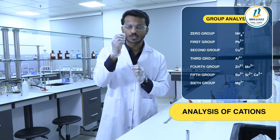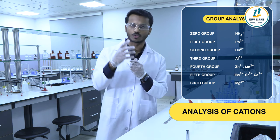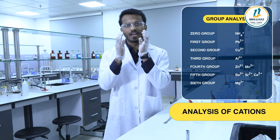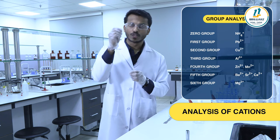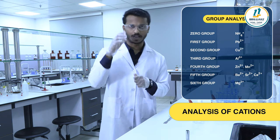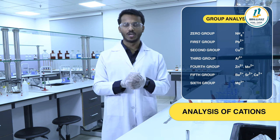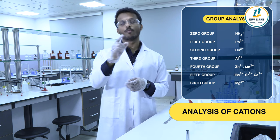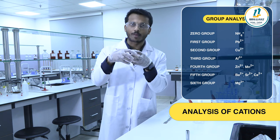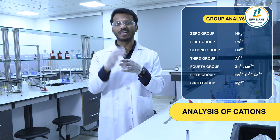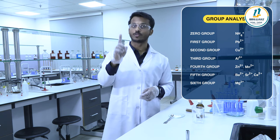What is the test for group zero? To a little of salt or salt solution, add sodium carbonate solution. If you add sodium carbonate and get a clear solution, it indicates the presence of ammonium. When you treat an ammonium salt with sodium carbonate, it forms ammonium carbonate, which is soluble in water — giving a clear solution.